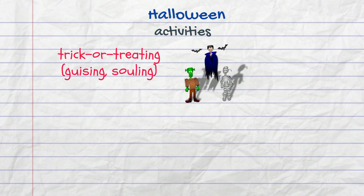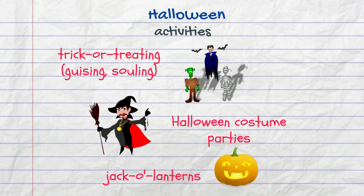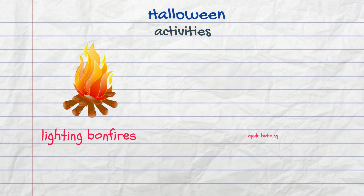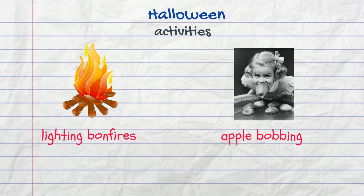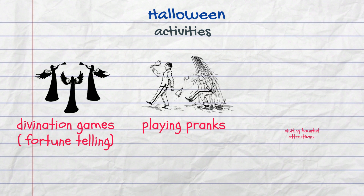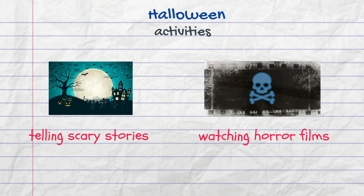Halloween activities include trick or treating, also known as guising because children are disguised in costumes, or souling — a soul is the name of the cake they get as a treat. Other activities include attending Halloween costume parties, carving pumpkins into jack-o'-lanterns, lighting bonfires, apple bobbing (a game where players try to get apples from a bucket filled with water using their teeth), divination games or fortune telling, playing pranks, visiting haunted attractions where ghosts are said to appear, and telling scary stories as well as watching horror films.